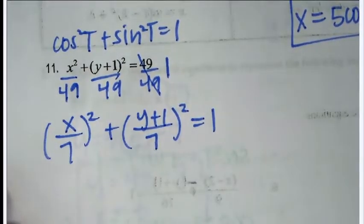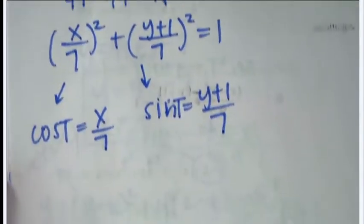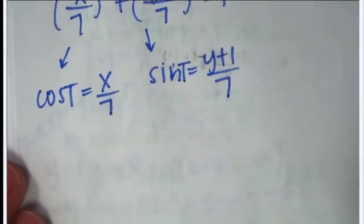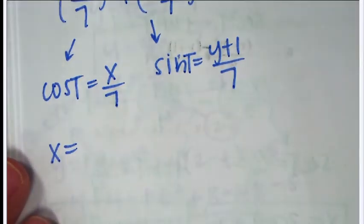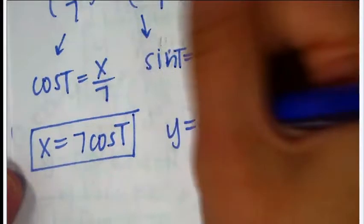The first fraction is cosine and the second is sine. To get x by itself, multiply by 7: x equals 7 cosine t. For y, multiply by 7 and subtract 1: y equals 7 sine t minus 1.